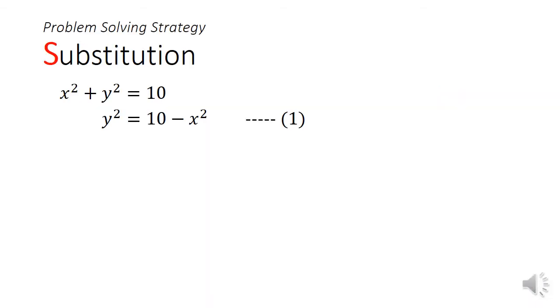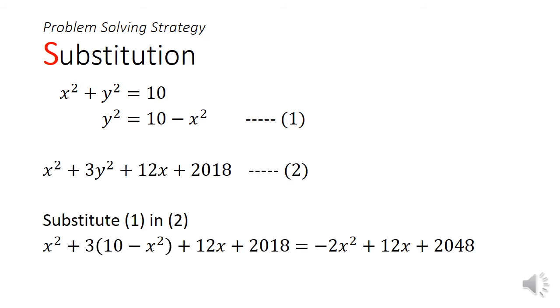Now the approach would be to take the first equation, x square plus y square equals to 10, and make y square the subject. We then substitute that equation into the other expression to form an expression purely in x, highlighted in red.